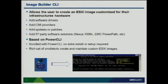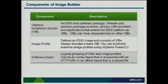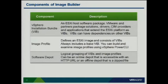The PowerCLI can sit on an external server or workstation and connect into vCenter. The three key components of Image Builder are: first, the vSphere Installation Bundle, which is the software package containing installable components we can modify. Second, the image profile, which is the ESX image and the VIBs. Third, the software depot, which is a collection of VIBs and image profiles. You may have multiple depots for different hardware platforms that require different installation bundles.